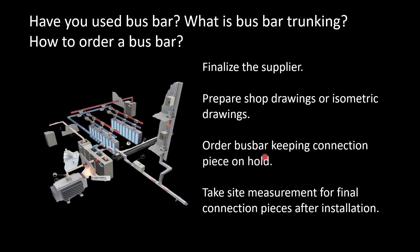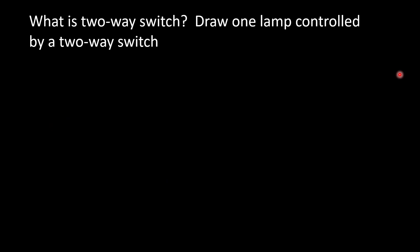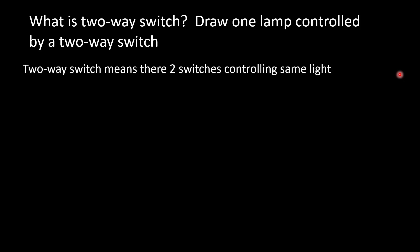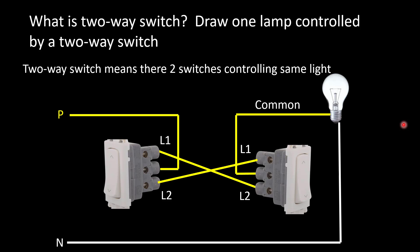What is a two-way switch? Draw one lamp controlled by a two-way switch. If you are applying for a junior position or a position requiring less than five years of experience, you will definitely face this question — it is normally asked to freshers. Two-way switch means there are two switches controlling the same light or same load. For the drawing: the line comes to the common terminal; L1 of the first switch is connected to L2 of the second switch; L2 of the first switch is connected to L1 of the second switch; then the common of the second switch goes to the light, and the neutral returns. This is a typical drawing of a two-way switch.